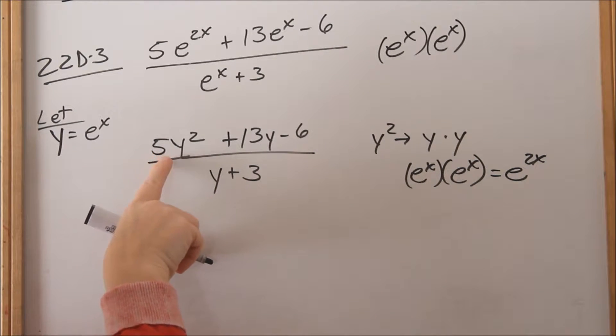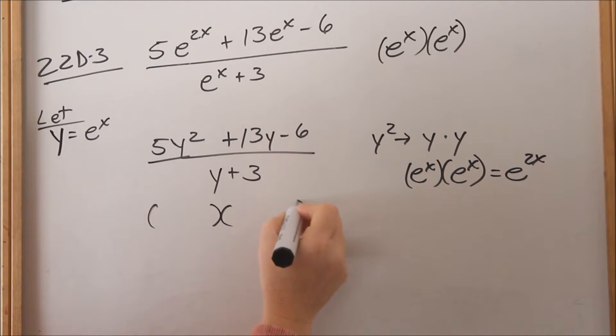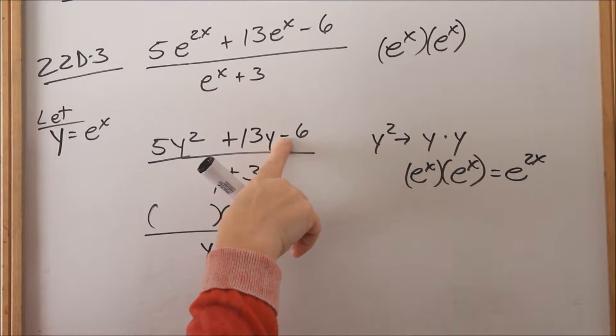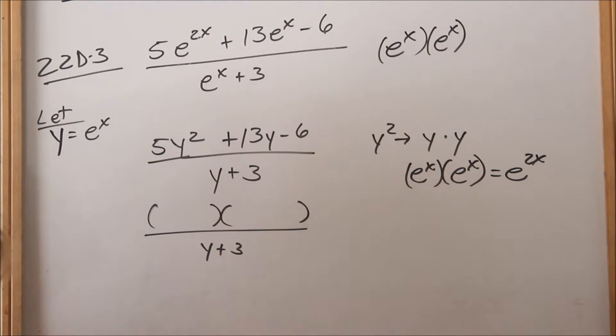The first thing you always do is look to see if you can factor something out. 5, 13, 6—I can't factor anything out. So I'm ready to go straight to two parentheses. I can tell by this that one's going to be positive, one's going to be negative.